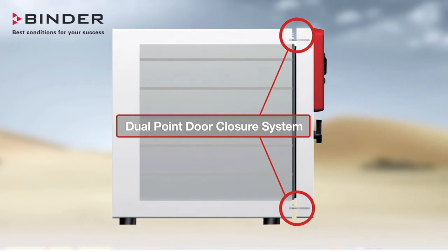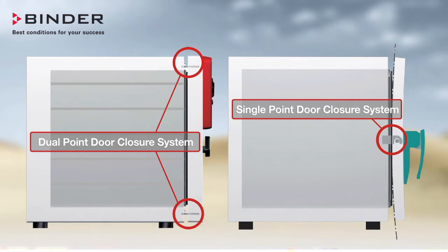Finally, Binder Ovens are equipped with an adjustable dual-point door closure system, while competitors have just a single-point door closure.